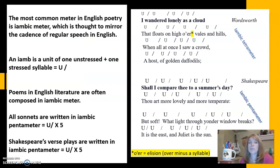So as I mentioned, the most common meter in English poetry is iambic meter, and it is sort of a mirror of the cadence of regular speech in English, the rise and fall of the syllables that we speak in normal language. An iam is a unit of one unstressed and one stressed syllable. Poems in English literature are often composed in iambic meter, frequently iambic tetrameter or iambic pentameter.